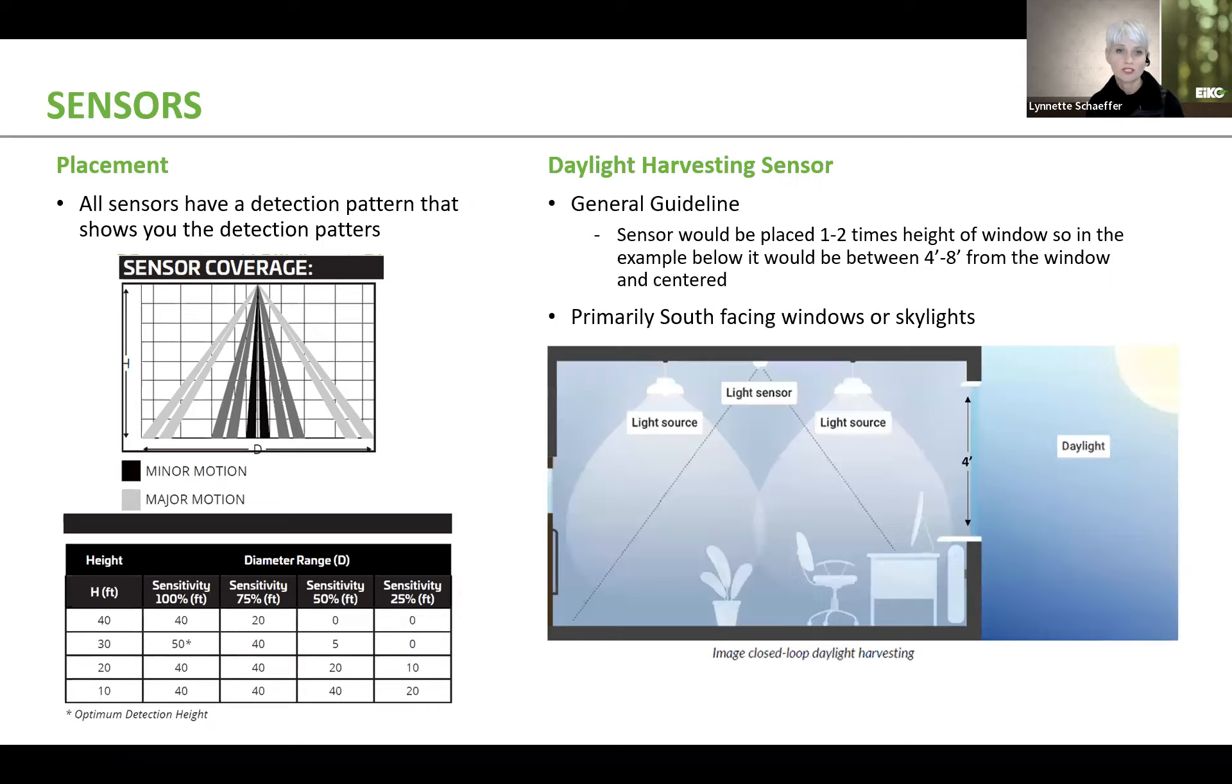Also, specifically for daylight harvesting sensors, these are usually used with anywhere where you have windows that are facing the south or maybe skylights. And a general rule of thumb is that the daylight sensor should be placed one to two times the height of the window. So in this example here, it would be between four feet to eight feet from the window and then centered in the space. That's a really good rule of thumb because you want to make sure you don't have that daylight sensor too close to the window. If you do, then you're not going to get that natural daylight coming in. You've got to make sure you get that back far enough to have that natural daylight coming in and have it be able to pick it up.